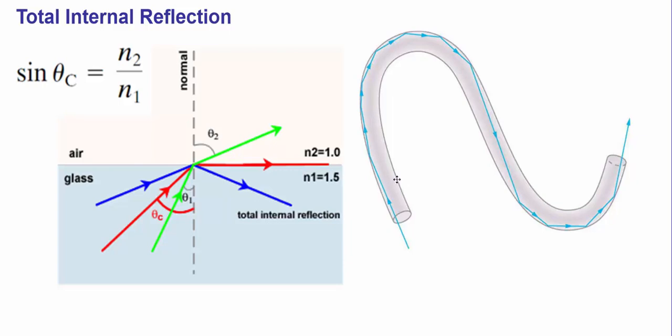It's this medium that has a higher index of refraction than the light that's surrounding it. And instead of it exiting that medium, it's going to stay in it. It's just going to bounce along. And it's going to travel at a very high speed.